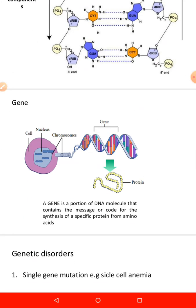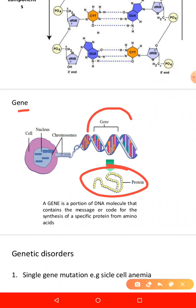A gene is the basic hereditary unit of the cell. A gene is a portion of a DNA molecule that contains the code for the synthesis of a particular protein from amino acids. It is like a book that contains the information necessary for protein synthesis.